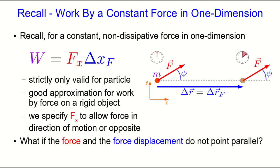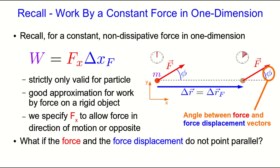But what if the force and the force displacement do not point parallel? Then how do we calculate the work by this force? Let's think about the case where an object moves through some displacement delta r — the same as the force displacement vector delta r_f — and among the other forces acting on this object there's a force of interest oriented at an angle phi relative to the force displacement vector.